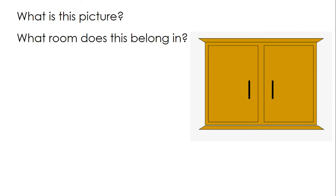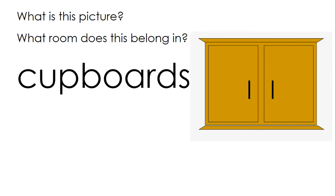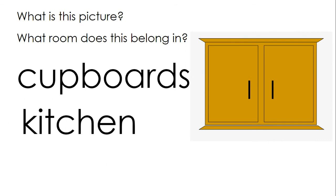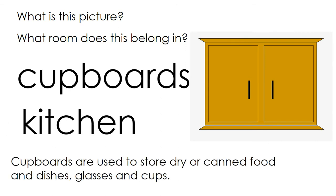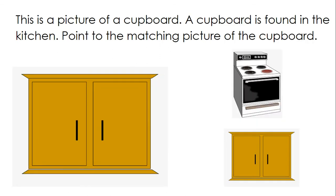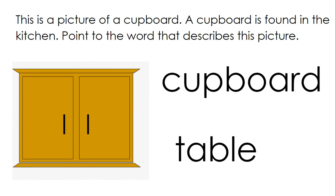What is this picture? This is a picture of cupboards. And what room does this belong in? It belongs in the kitchen. Cupboards are used to store dry or canned food and dishes, glasses and cups. This is a picture of a cupboard. A cupboard is found in the kitchen. Point to the matching picture of the cupboard. Great, you made a match. Point to the word that describes this picture. Cupboard.